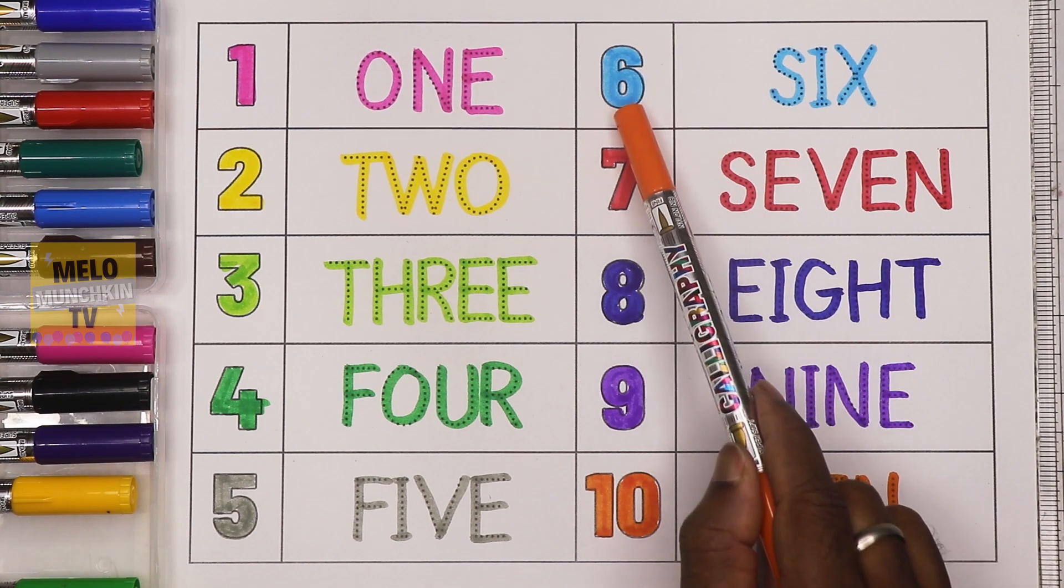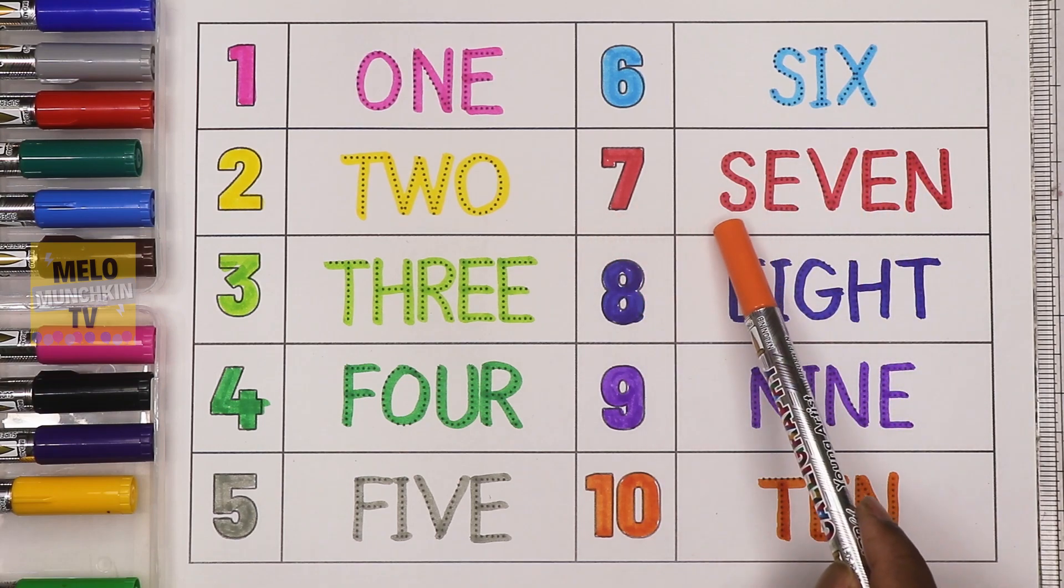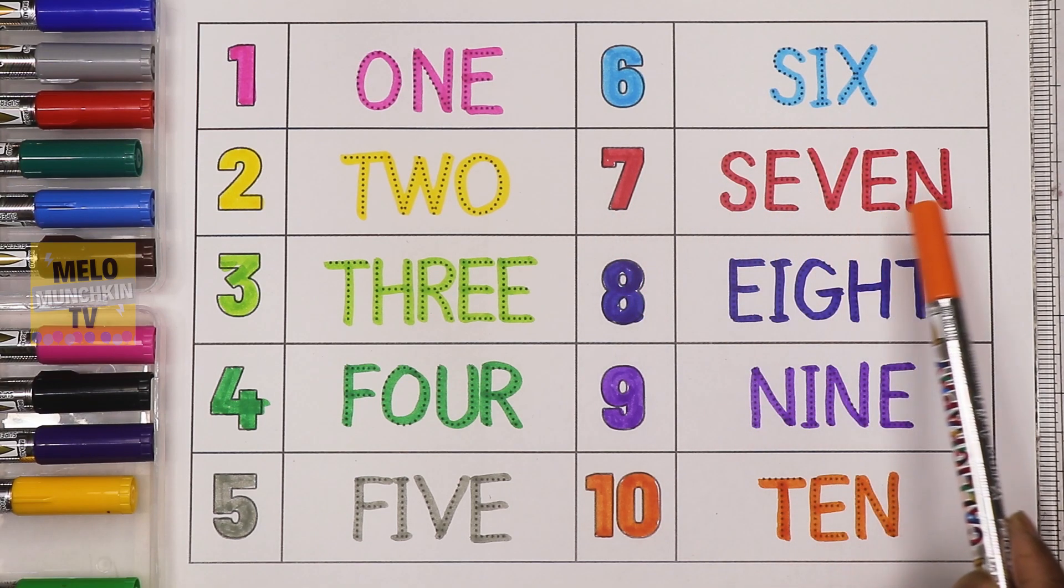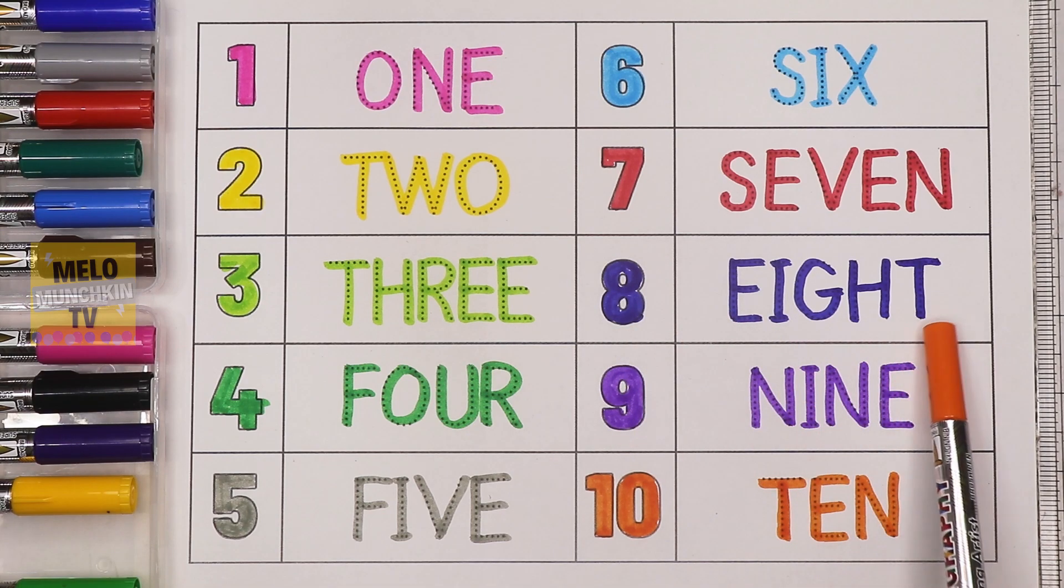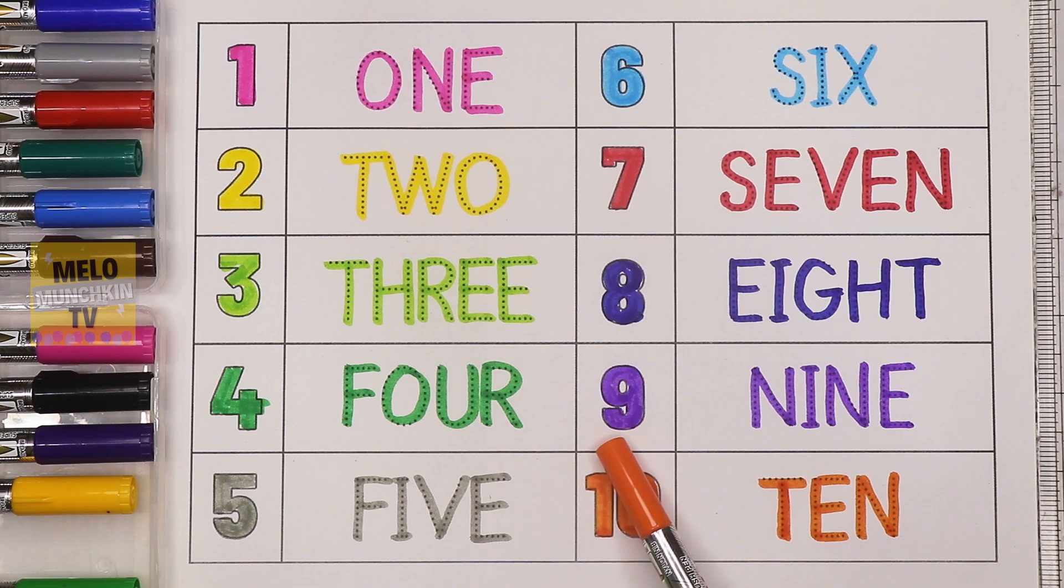Six, S-I-X, six. Seven, S-E-V-E-N, seven. Eight, E-I-G-H-T, eight. Nine, N-I-N-E, nine. Ten, T-E-N, ten.